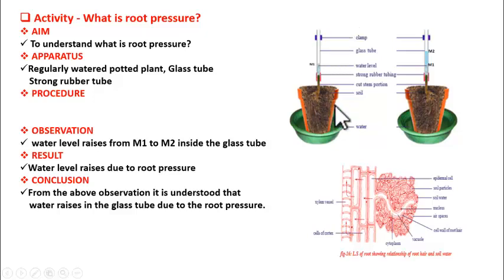Now to understand this concept, there is an activity given in your textbook. Let us see what it is. The apparatus required for the activity are a regularly watered potted plant, a glass tube, and a strong rubber tube.